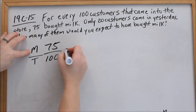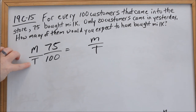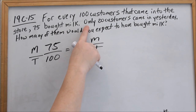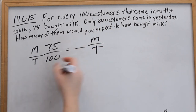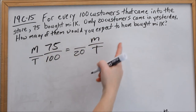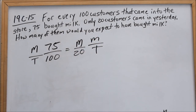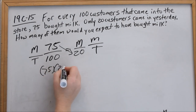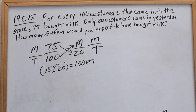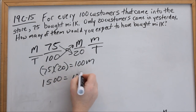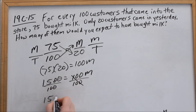As long as I put milk in the numerator here, milk has to go in the numerator on the other side too. If total is in the denominator here, then total has to be in the denominator on the other side. Only 20 customers came in yesterday — 20 represents total customers, so 20 goes in the denominator. How many bought milk? We don't know, so we put our variable M there. Now we cross multiply: 75 times 20 equals 100 times M. 75 times 20 is 1500, so 1500 equals 100M. Divide both sides by 100 — M equals 15.